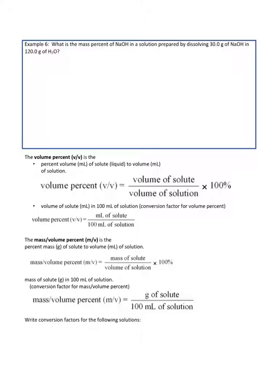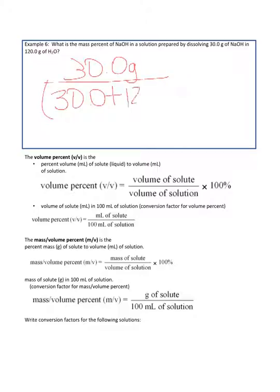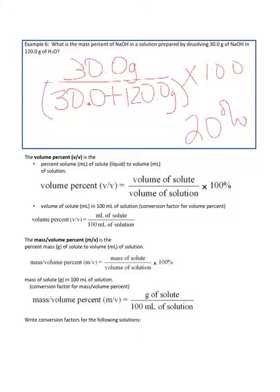Let's do one ourselves. What is the mass percent of sodium hydroxide in a solution prepared by dissolving 30 grams of sodium hydroxide in 120 grams of water? The formula says: take the amount of solute divided by the whole solution, which is 30 grams plus 120 grams of water, times 100. So 30 divided by 150, times 100, gives you 20%.